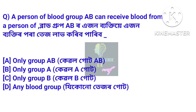A person of blood group AB can receive blood from a person of any blood group, as AB is the universal recipient.